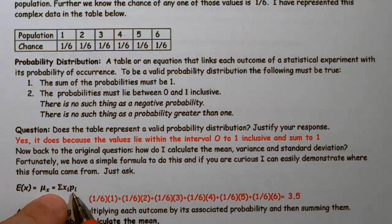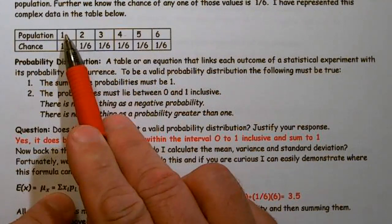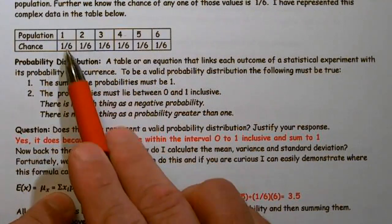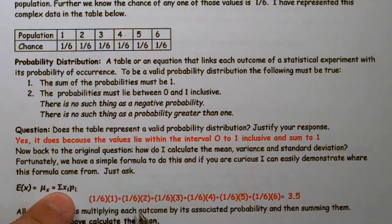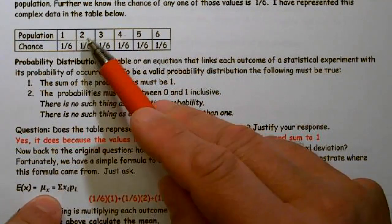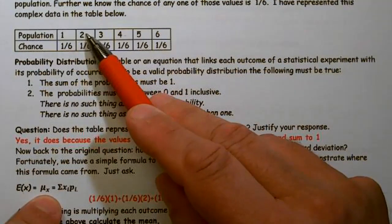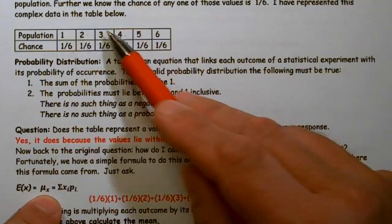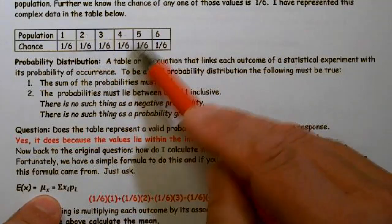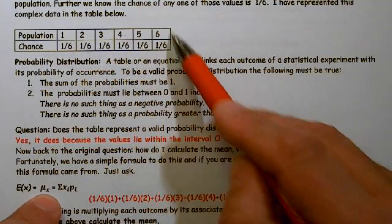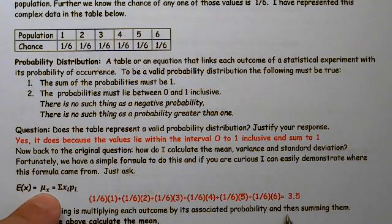It's the individual X times its associated probability. So 1 is my individual X times my probability of 1/6. Plus that symbol right there, that capital sigma means summation or add, plus 1/6 times my associated X. 3 times 1/6. Plus 4 times 1/6. Plus 5 times 1/6. Plus 6 times 1/6. And that would be my work shown.